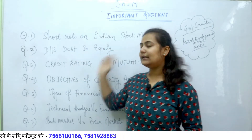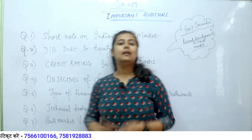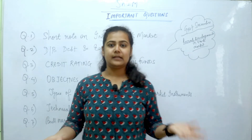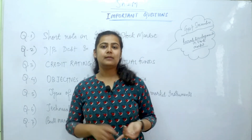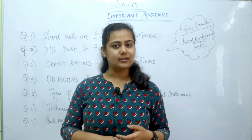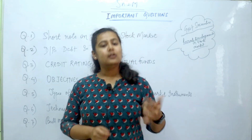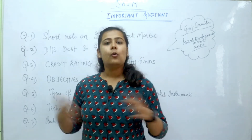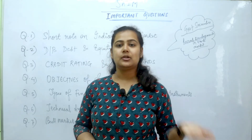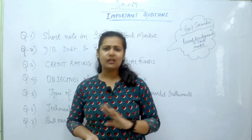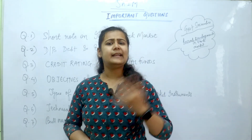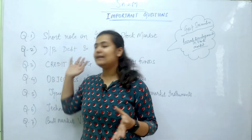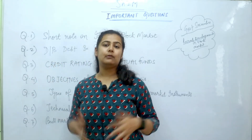The second question is the difference between debt and equity. Debt means borrowed funds; equity means owners' funds. Debt sources include bank loans, debentures, loans from financial institutions, and trade credit. In owners' funds there are three sources: preference shares, equity shares, retained earnings, ADR, GDR, and IDR. You can explain the proper details of debt and equity instruments.